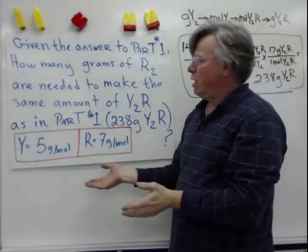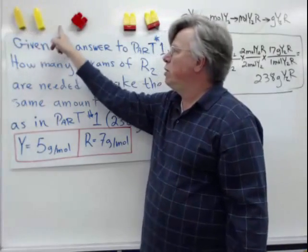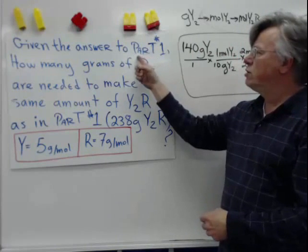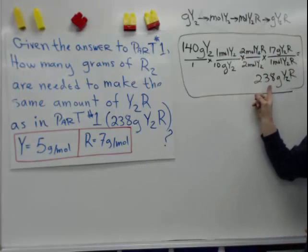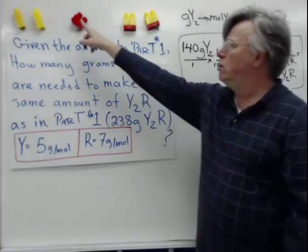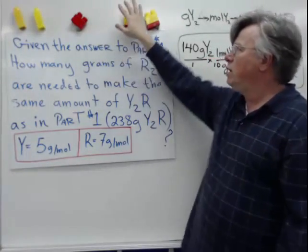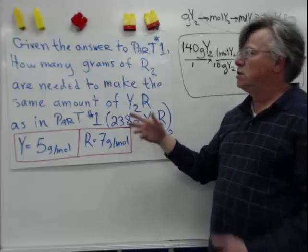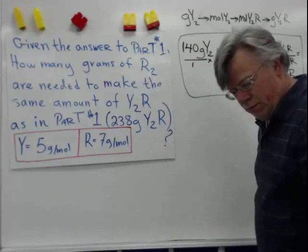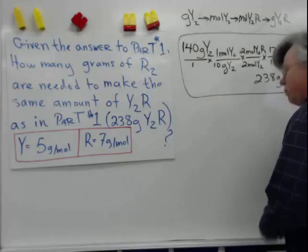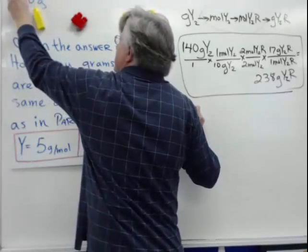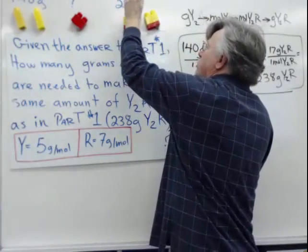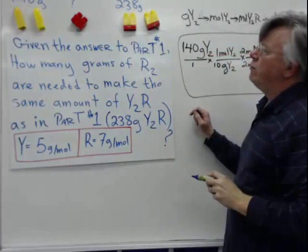The chemical reaction from the first problem is the same: 2Y₂ + R₂ → 2Y₂R. Now given the answer to part one — 238 grams of Y₂R — how many grams of R₂ would be needed to react and make that amount of product? We know we started with 140 grams of Y₂, and the question is how many grams of R₂ would be needed to produce the 238 grams found in part one.